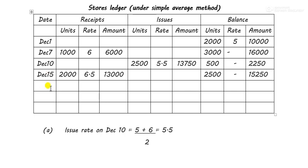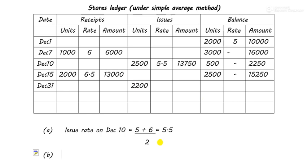Now comes December 31 — an issue of 2200 units. To calculate the rate of this second issue, we add all the rates and divide by the number of lots. Now we have three types: ₹5, ₹6, and ₹6.5. But should we add all three rates? No — because we need to check which lots still have units remaining.